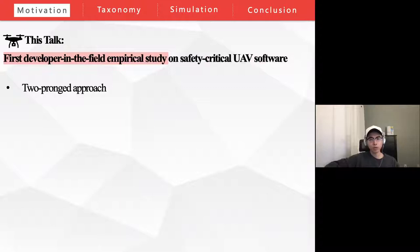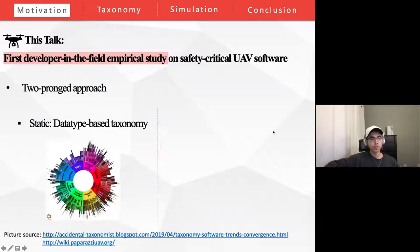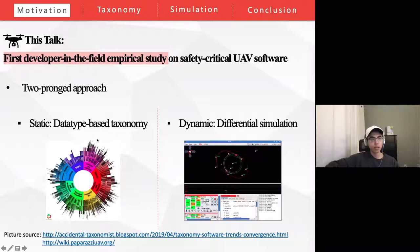In our empirical study, we take a two-pronged approach to explore the bonding functions in paparazzi. Statically, we identify all bonding function instances in the source code and provide a detailed data type-based taxonomy of them. And dynamically, we perform a differential simulation to illustrate the impact of bonding function uses in UAV behavior.